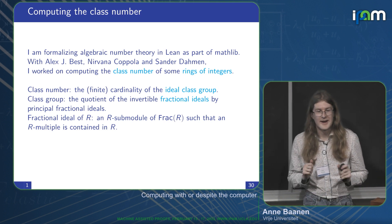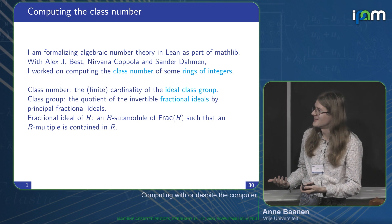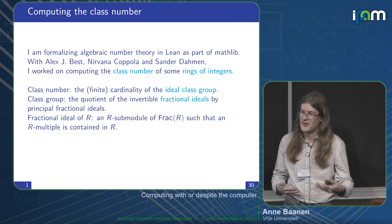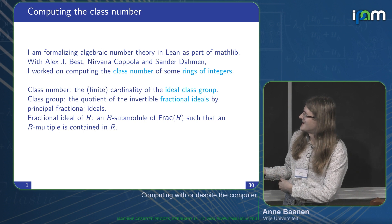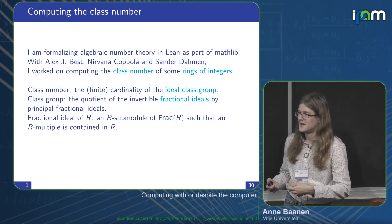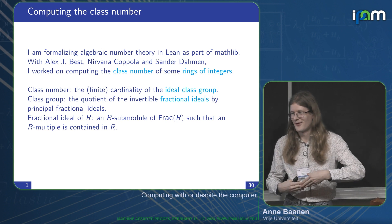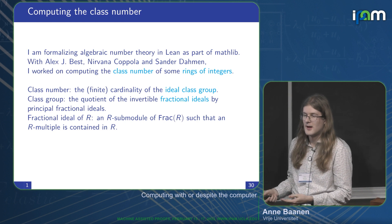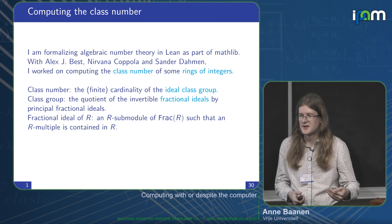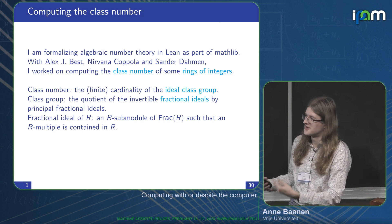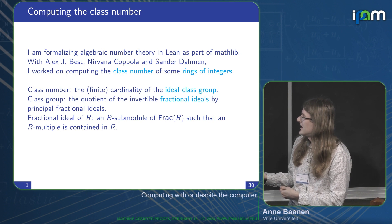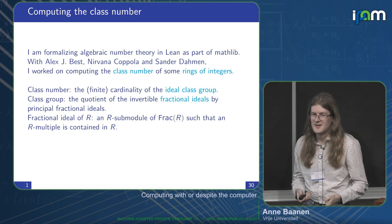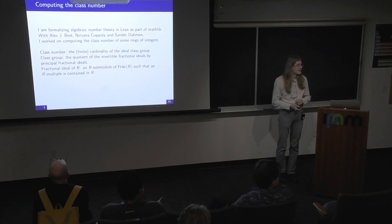The class number is a finite number — it's just the number of elements in what's called the class group. The class group is the quotient of a group of fractional ideals by the principal fractional ideals. A fractional ideal of a ring R is like an ideal but with fractions: instead of an R-submodule of R itself, we take a submodule of the field of fractions of R, such that multiplying everything by some fixed number brings us back into R.